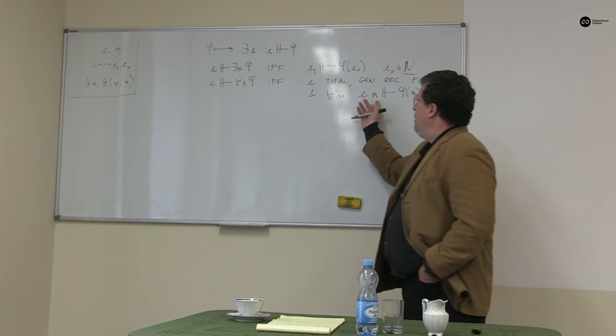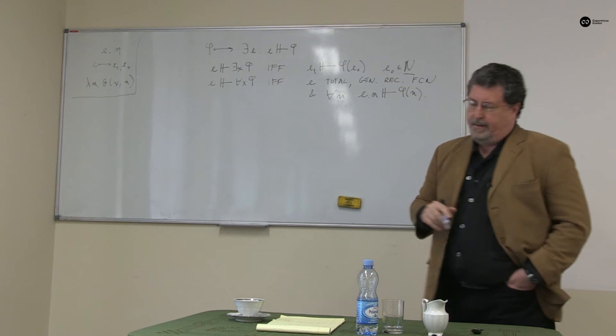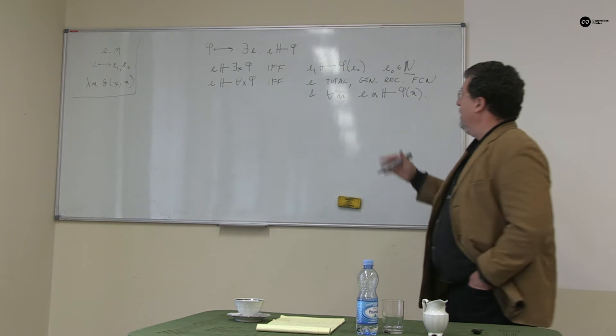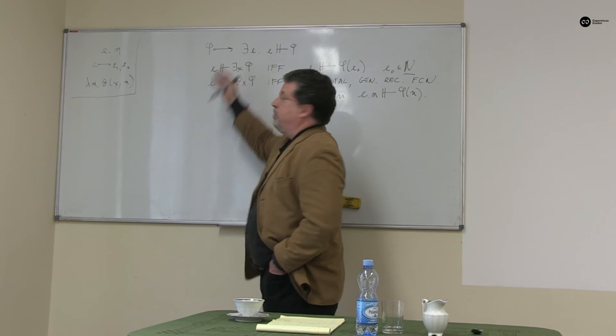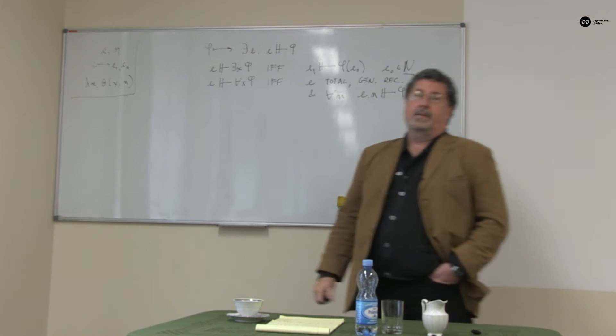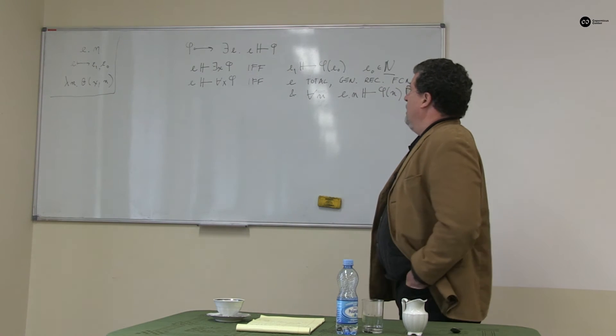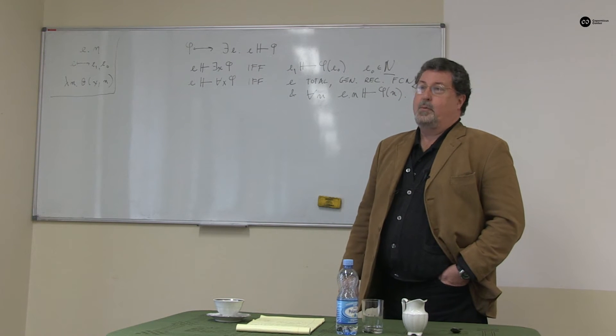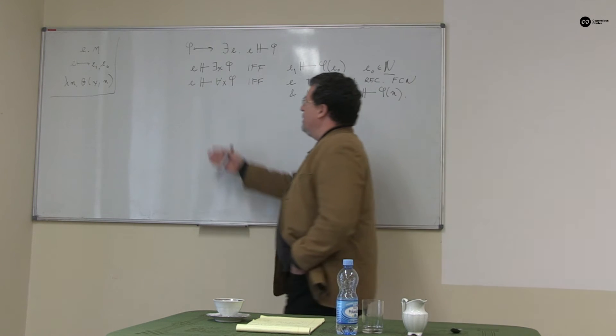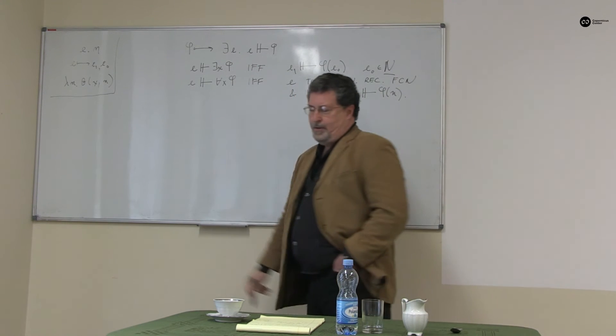So it's a function, I input a natural number, I get a proof out, proof of phi of n. I should be careful though, I'm not thinking of this as a concrete proof relation. I'm thinking of it as an abstract relation between, we can encode everything and call them between numbers, but at least between numbers and parametrized formula.